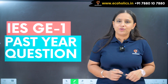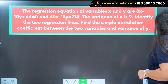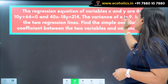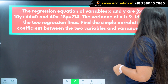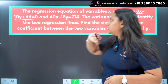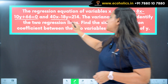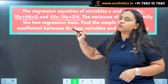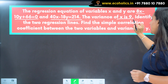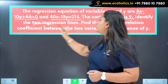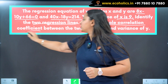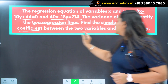The question is related to the topic of econometrics. The regression equations of variables X and Y are: 8X minus 10Y plus 66 equals 0, and 40X minus 18Y equals 240. The variance of X is 9.